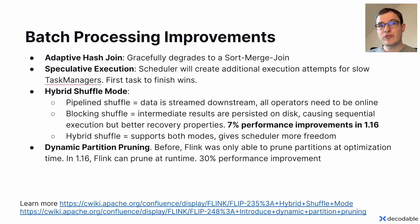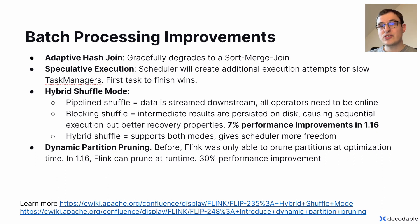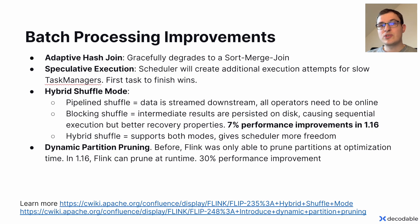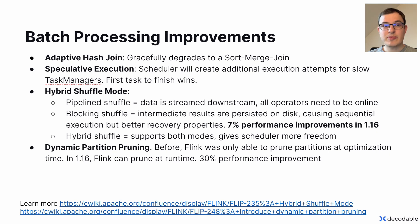There has also been a lot of improvement in the area of batch processing — almost half of the new features are around batch processing. The hash join algorithm in Flink batch has been extended to be an adaptive hash join implementation, which gradually degrades to a more robust sort-merge join in case the hash join becomes unstable. We also introduced speculative execution for batch jobs: if a scheduler detects that a task on a task manager is very slow or the task manager is unhealthy, it will schedule an additional execution and the first task to finish wins.